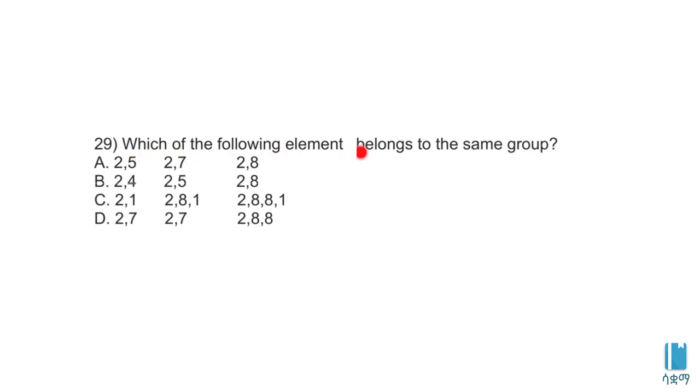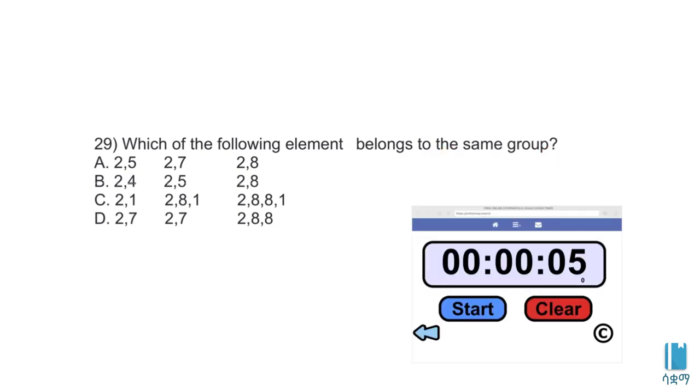Which of the following elements belongs to the same group? Elements in the same group have the same number of outer shell electrons. We need to find the electron configuration for each element.